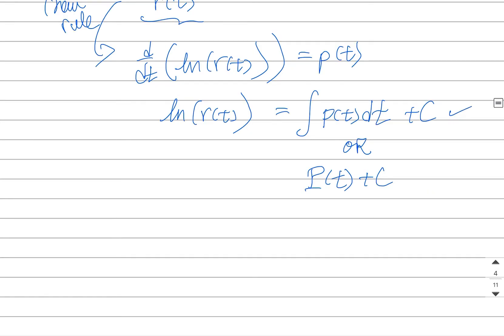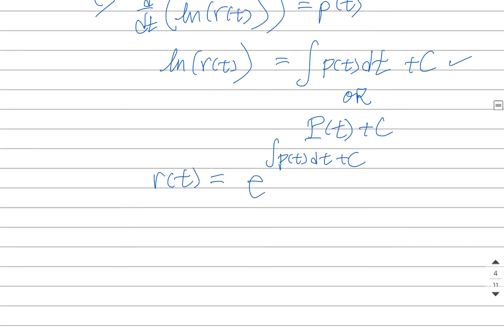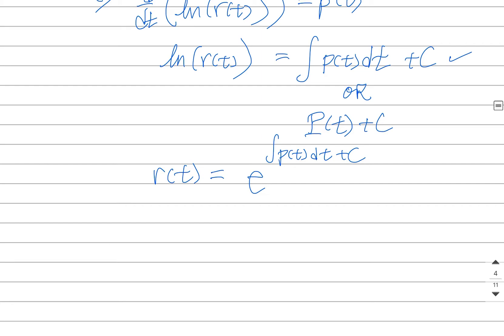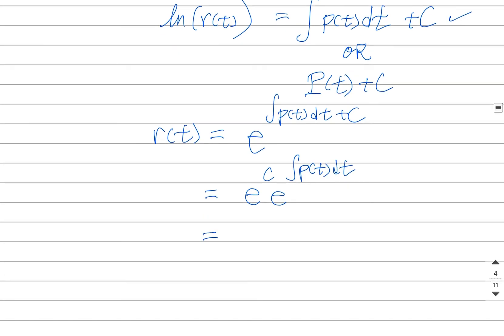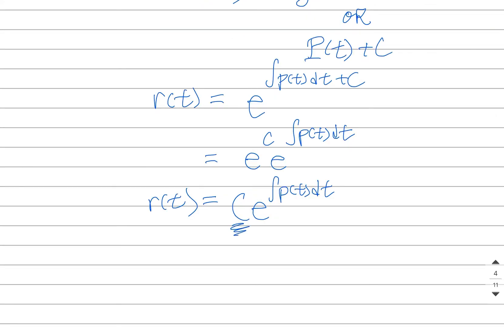We'll have r(t) has to be the following function. It has to be e to the power of this thing plus a constant. We can play the same game that we had before. We can separate this out. And this is just going to be c e to the whatever up there.